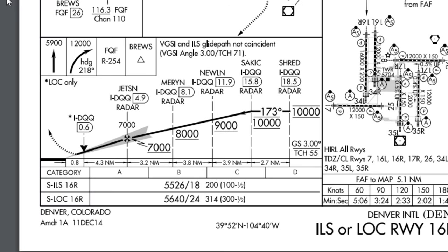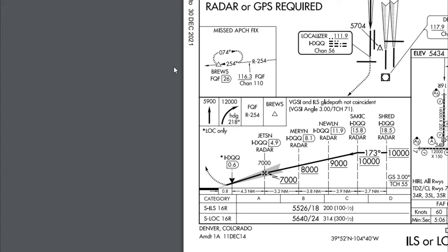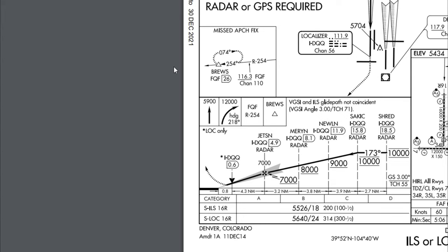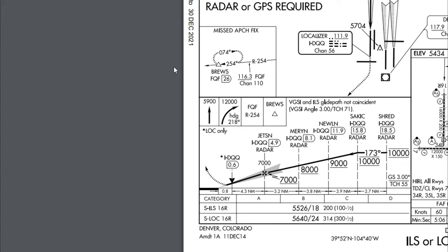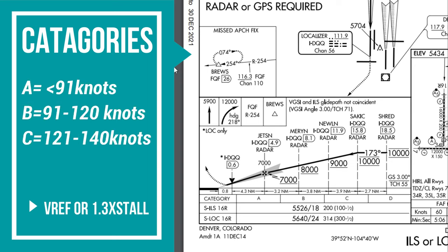Now let's look at the minimums section below the profile view. At the top above the minimums is a category section: category A, B, C, and D — with one more category mainly used for military aircraft. These categories classify your aircraft based on Vref speed. If you're unsure of the Vref speed for your aircraft, take 1.3 and multiply it by the stall speed. Category A is under 91 knots; category B is 91 to 120 knots; category C is 121 to 140 knots; and category D is 141 to 165 knots.